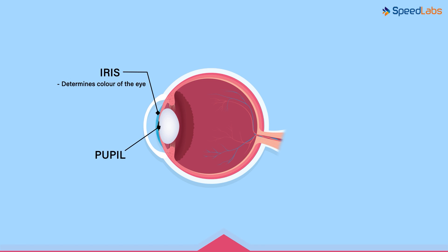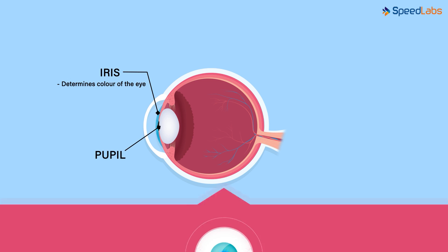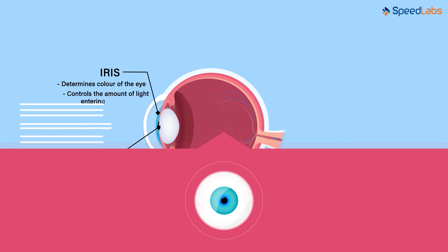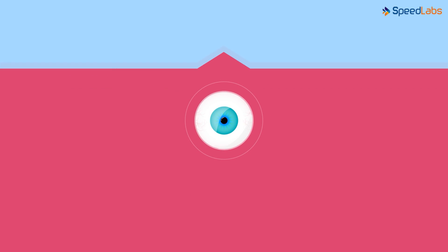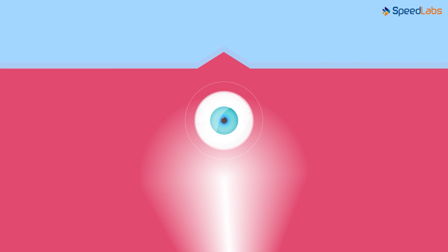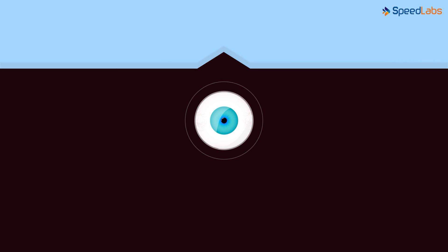The iris actually acts like a shutter of a camera. It controls the amount of light entering the eye by enlarging or shrinking, thereby adjusting the size of the pupil. When you focus light from a torch directly into a person's eye, the iris shrinks because the intensity of light is too much for the eyes to bear. The shrinking iris stops unwanted light from entering through the pupil. When it's dark or there's less light, it expands, allowing more light to enter through the pupil.